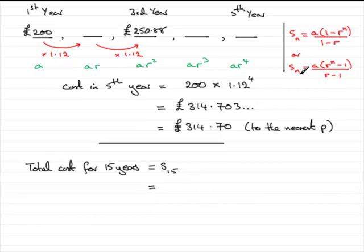Well S15 when n is 15 is going to be a, a being the first term, 200 multiplied by the common ratio which we can see is 1.12. So we've got 1.12 to the power n, n being 15.